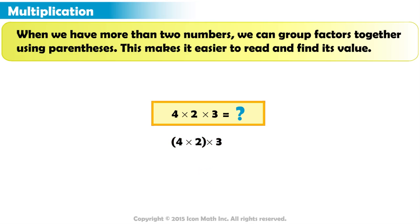Start by multiplying the numbers inside parentheses first. Four times two equals eight. Now we have two numbers. Eight times three equals twenty-four.